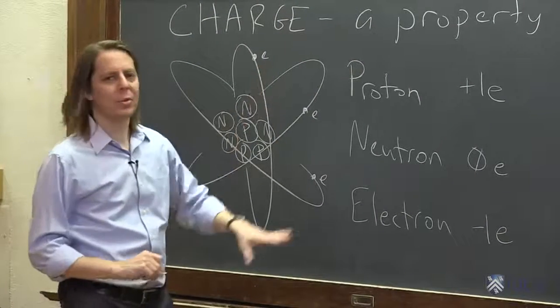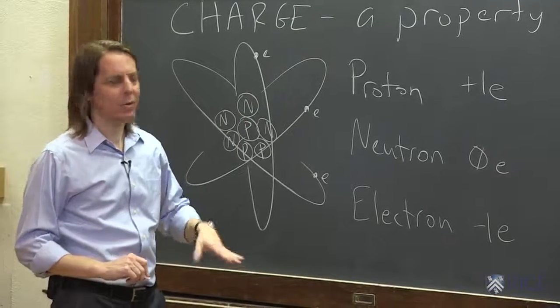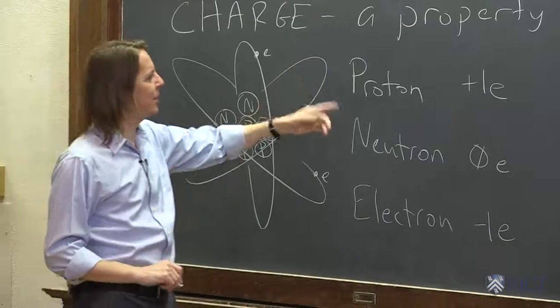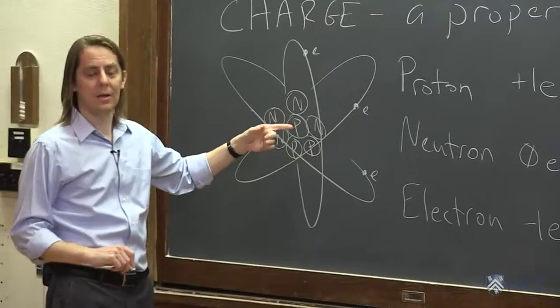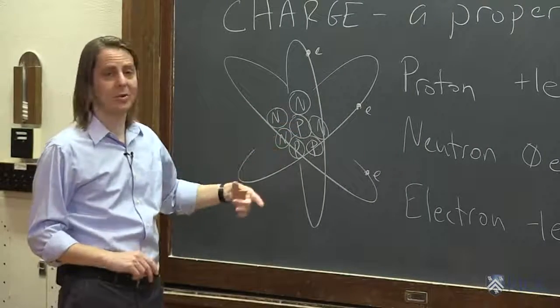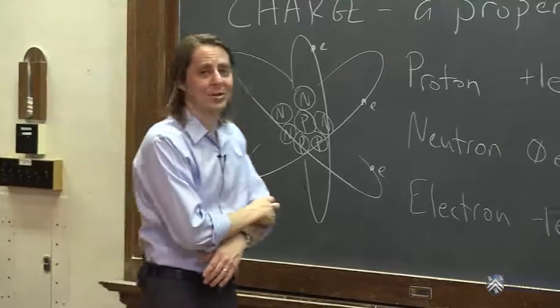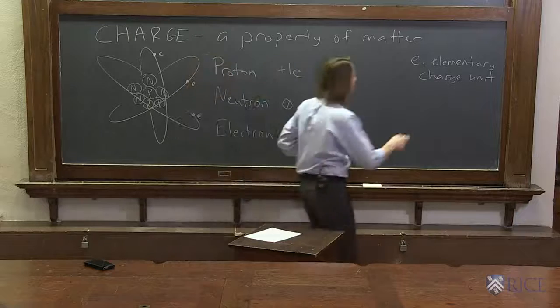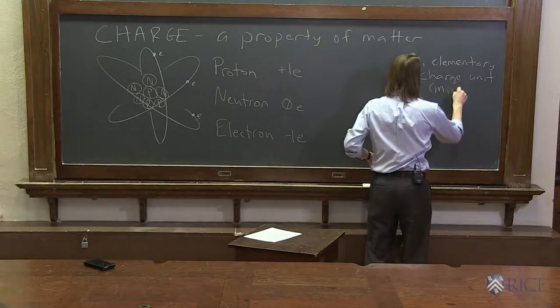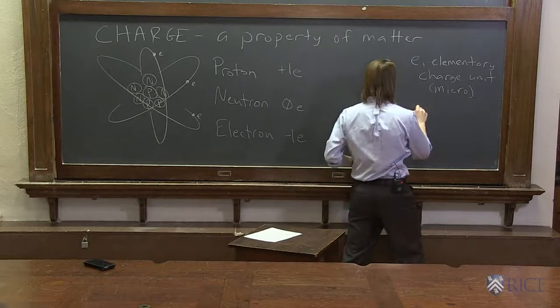So we also want to think in terms of the macroscopic unit. We don't always use microscopic. Because if you think about it, if every proton has 1e, there's a lot of protons in an atom. And then there's a lot of atoms in an object. So the charge could get really big, big numbers. So we also have a macroscopic. So if this is micro, we also have C.